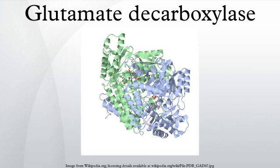GAD exists in two isoforms encoded by two different genes, GAD1 and GAD2. These isoforms are GAD67 and GAD65, with molecular weights of 67 and 65 kDa, respectively.